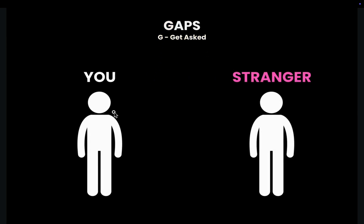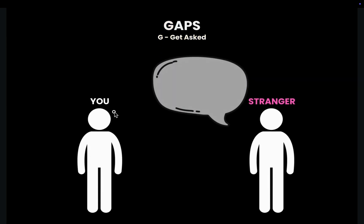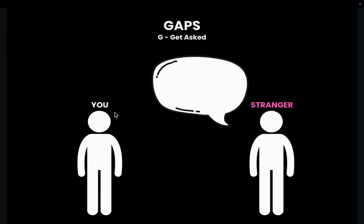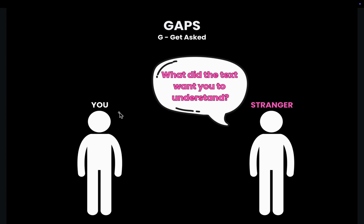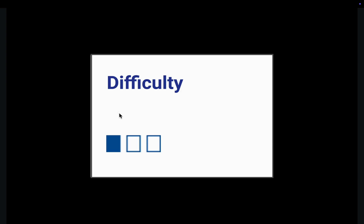The G in GAPS stands for Get Asked. As you read, imagine a stranger asking you: what does the text want you to understand? This is exactly how you should read — always thinking about what the writer wants you to understand.